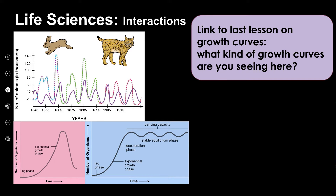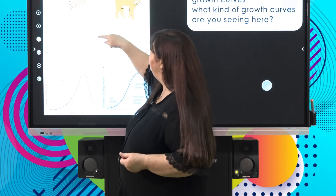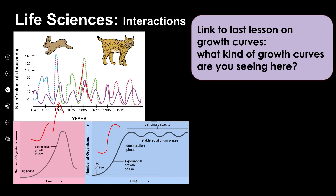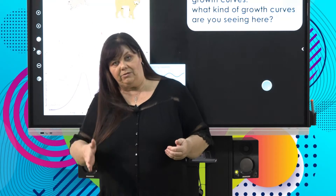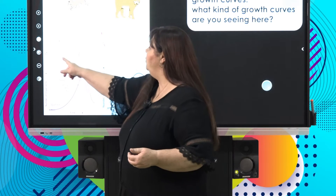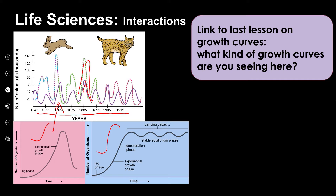Linking to our lesson on growth curves — are we seeing J-shaped exponential or S-shaped growth? We're clearly seeing repeated J-shaped graphs: boom and bust cycles. A population increases, but then something brings it under control and the population decreases. We see exponential growth increasing, decreasing, increasing, decreasing again over many periods of time. This is typical of an interaction between a predator and prey.